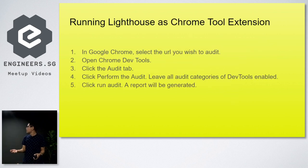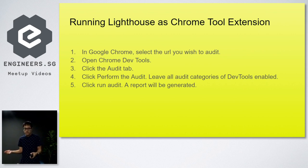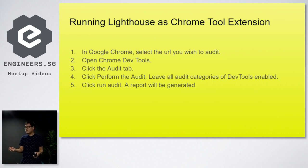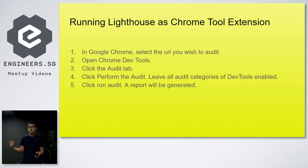How do we run Lighthouse as a Chrome DevTools extension? First, in Google Chrome, we select the URL we wish to audit, then we open Chrome DevTools on the browser and click the Audits tab. From the Audits tab, we perform the audits — we select the different audit categories, run the audit, and then generate the report.